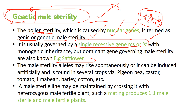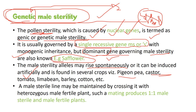In a few cases — like in safflower — a dominant gene can govern male sterility. These arise spontaneously or can be induced artificially. Genetic male sterility is also found in several crops including pigeon pea, castor, tomato, barley, and cotton.